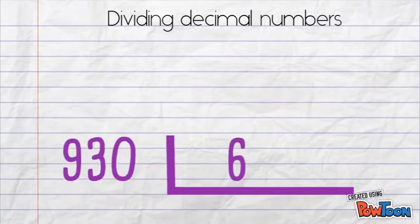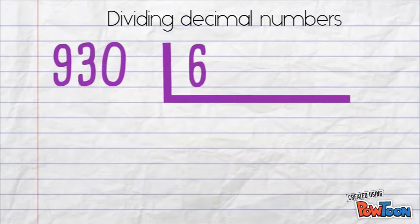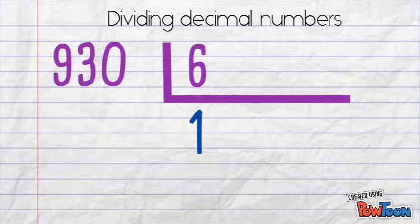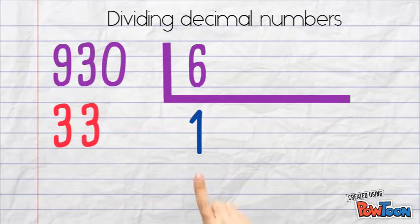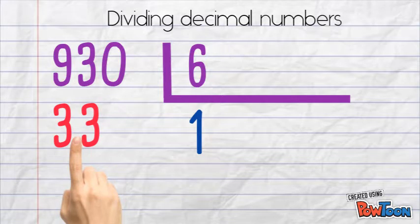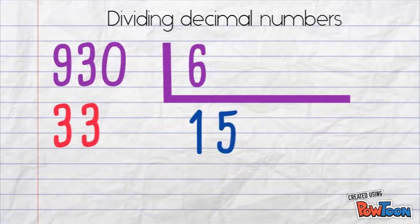Now I can treat this division as a normal one. 9 divided by 6 is 1, which will leave us a remainder of 3. I bring down the 3. We'd now ask ourselves, how many times can I multiply 6 in order to get close to 33? The answer is 5.